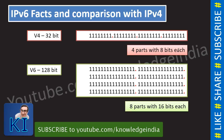The number of possible IPv4 addresses is 2 to the power 32, because every bit can be 0 or 1. In IPv6, every part is 16 bits, and there are 8 such parts — so totally it becomes 16 × 8 = 128 bits. IPv6 is a 128-bit address, which means the number of possible addresses is 2 to the power 128 — a very big number.